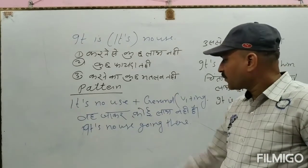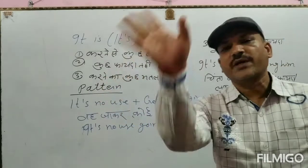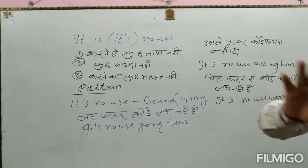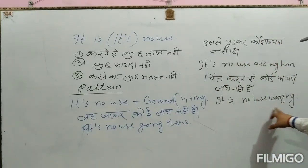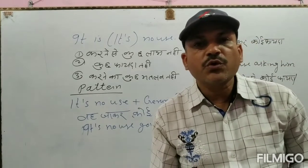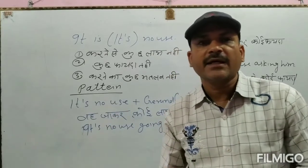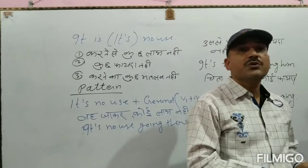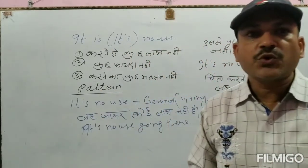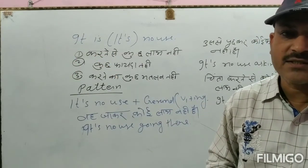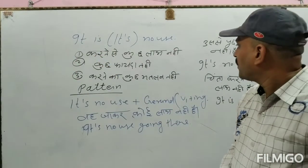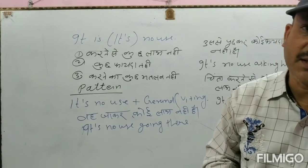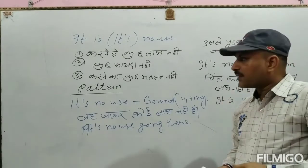मेरे साथ बोलिए फिर — वहाँ जाकर कोई लाभ नहीं — 'It's no use going there.' चिंता का कोई फायदा नहीं — 'It's no use worrying.' और देखिए: 'It's no use painting,' 'It's no use whitewashing on the fence,' 'It's no use talking.' इन सभी sentences में It's no use के बाद gerund (V+ing) आता है।